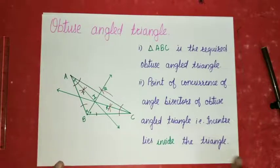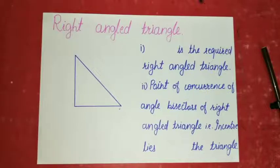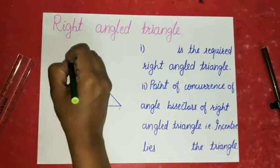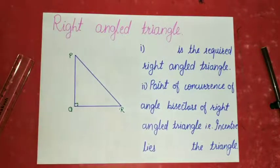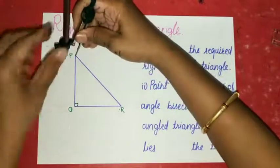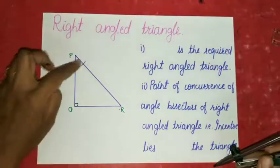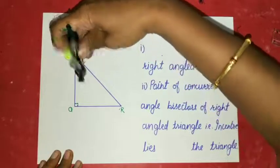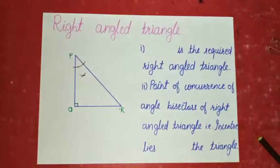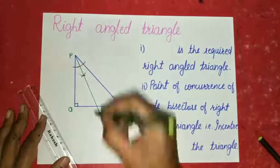We have completed the construction of angle bisectors of the obtuse angle triangle. Now we will see angle bisectors of a right angle triangle. Here one of the angles is a right angle, so it is a right angle triangle. Give any name to the triangle — PQR. Take the compass, put the needle end on vertex P, and give arcs on both arms of angle P. From the two intersecting points, give two more arcs and join them to make a ray. Name it X.